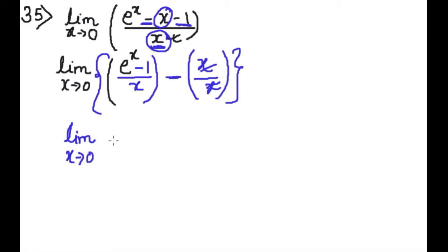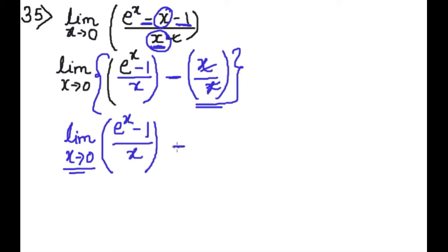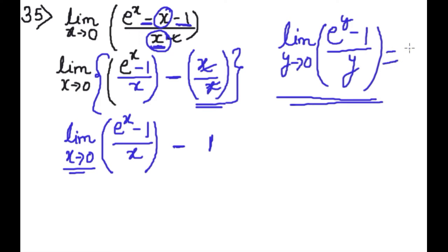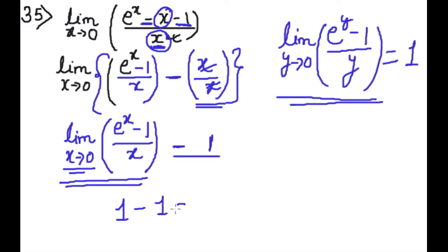Limit of x is 0 — अब limit of x है और यहां पर x नहीं बचा, तो हम इस portion को अलग कर देंगे limit of x से, क्योंकि उसकी जरूरत नहीं है। हमारे पास एक formula है: limit of y is 0, e^y minus 1 by y is equal to 1. तो इस पूरे को equal to 1 लिखेंगे, नीचे minus 1, equal to 0 — यह हमारा answer है।